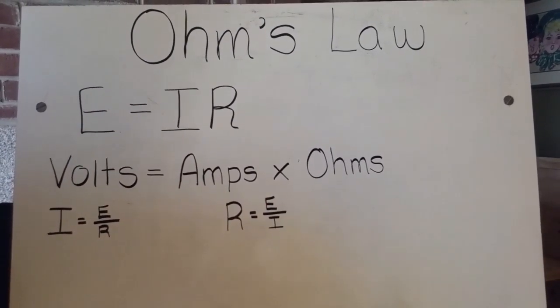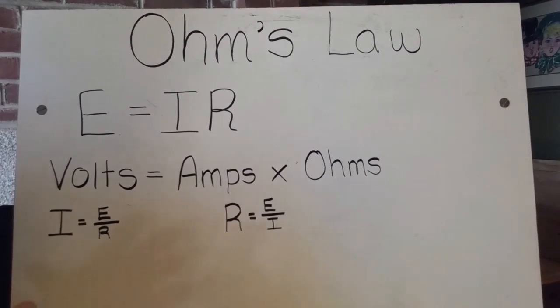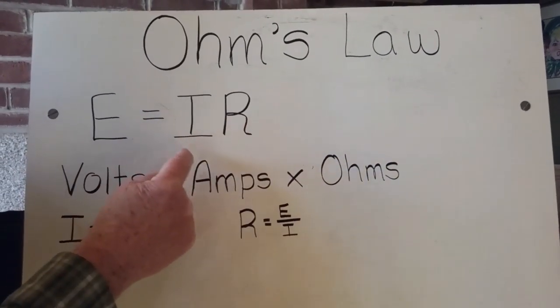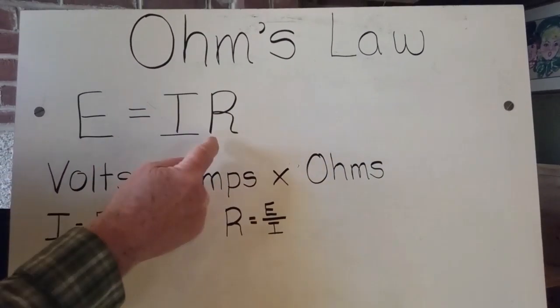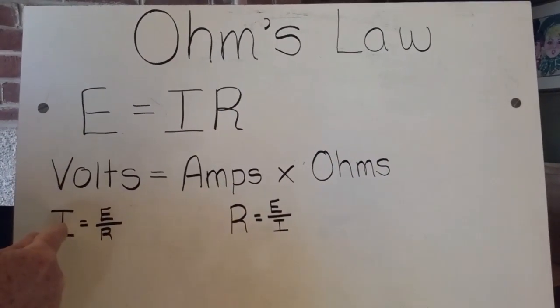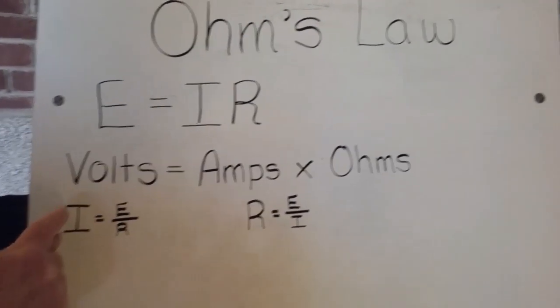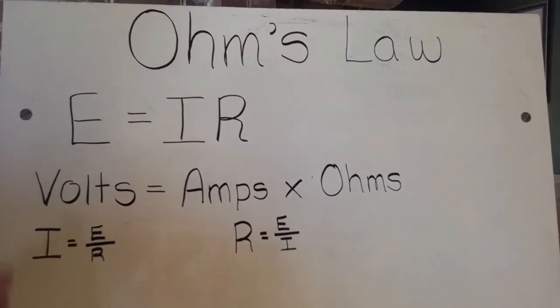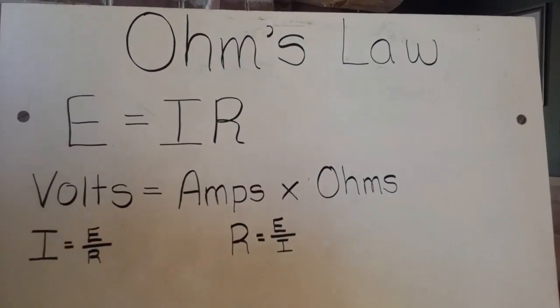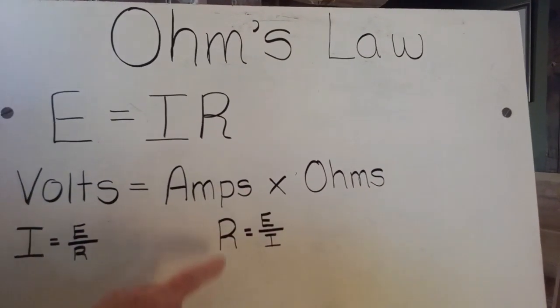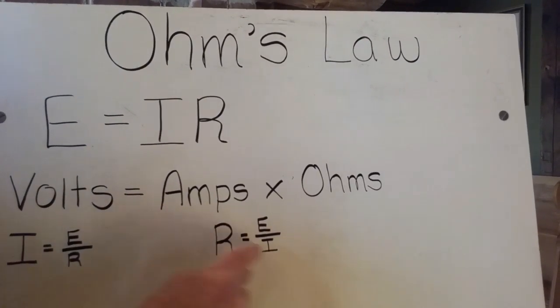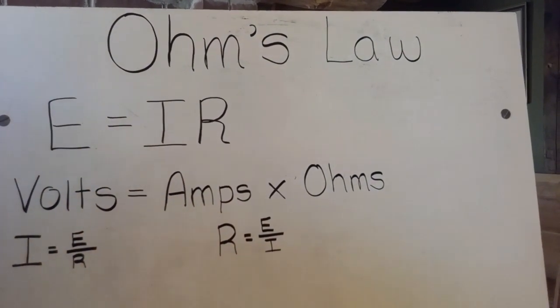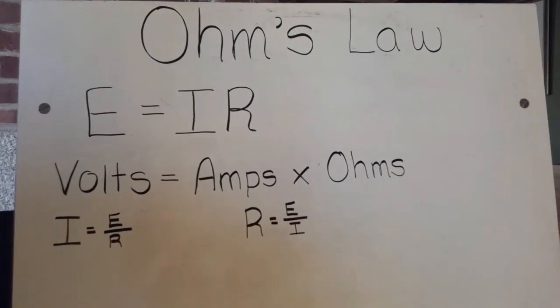But more importantly, you get an intuitive idea of what happens when you change any one of these. So since E equals I times R, if you make I bigger or R bigger, or both of them bigger, then E gets bigger. But if you come over here and look at this, if you make E bigger, I gets bigger, more voltage equals more current, but more resistance equals less current. Because it's inverse, it's divided by over here. If you have more voltage, you have more resistance to keep the same current. Or if you have more current, you need less resistance to keep the same voltage. So you get this intuitive idea of how to work with this stuff.